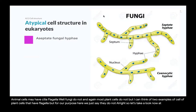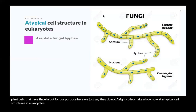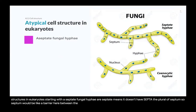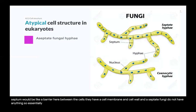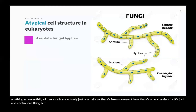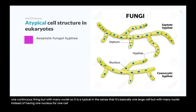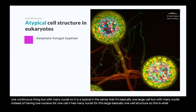Let's look at atypical cell structures in eukaryotes, starting with aseptate fungal hyphae. Aseptate means it doesn't have septa — a septum being a barrier between cells. They have a cell membrane and cell wall, but aseptate fungi have no internal barriers. Essentially, all these cells are actually just one cell because there is free movement throughout — it is one continuous structure but with many nuclei. So it is atypical in the sense that it's basically one large cell with many nuclei instead of one nucleus per cell.